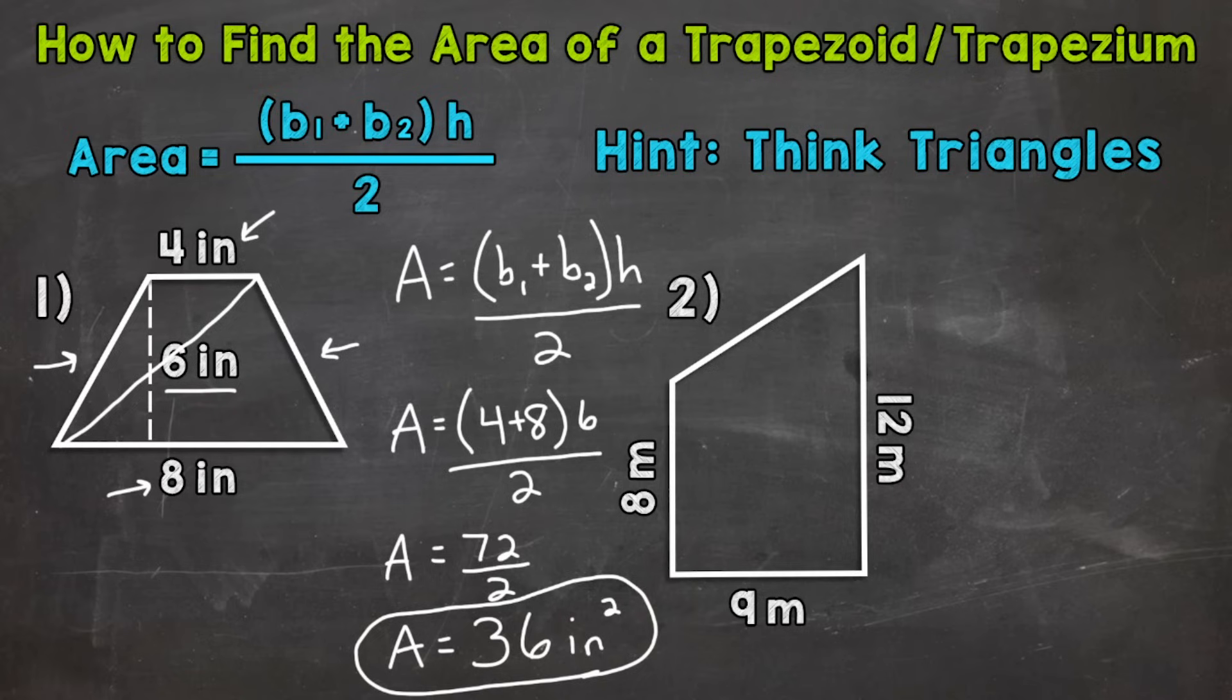Now, the triangle's bases will be the same as the trapezoids. They will correspond. And the height of the triangles will be the same as the trapezoid as well. So what we could do, we could find the area of those two triangles and add them together to get the area of the trapezoid. But we can combine that process into one formula, which is what we just did when we did base one plus base two times the height divided by two.